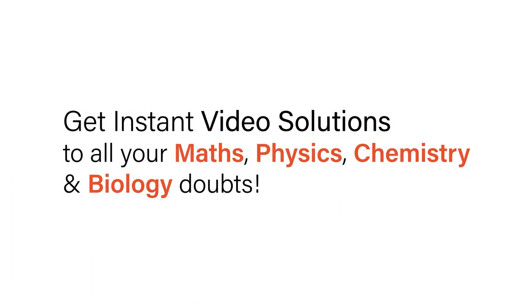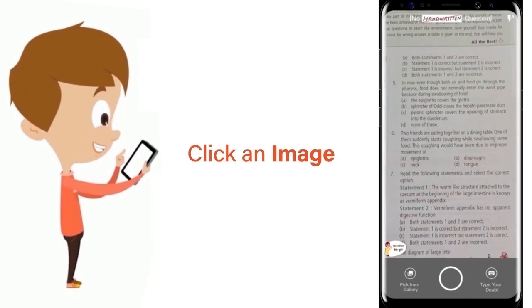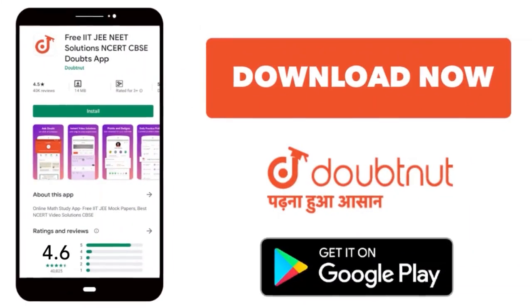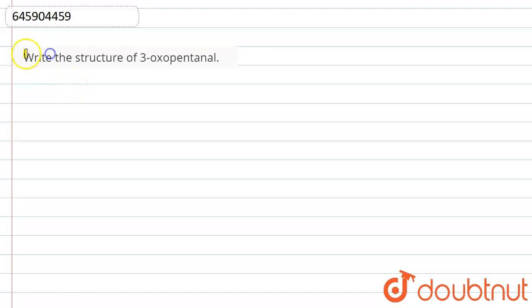With Doubtnut, get instant video solutions to all your maths, physics, chemistry, and biology doubts. Just click the image of the question, crop the question, and get instant video solution. Download Doubtnut app today. Hello students, the question is write the structure of 3-oxopentanal.